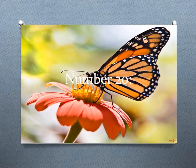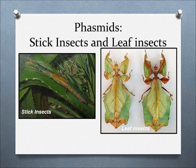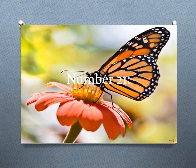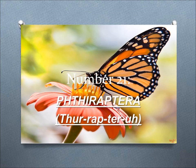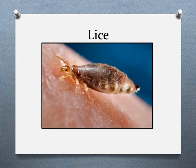Number 20, Phasmatodea. This order includes phasmids, which are large, slow-moving insects that resemble sticks or leaves. Number 21, Phthiraptera. This order includes lice, the small wingless insects that are parasites on mammals and birds, often permanently.